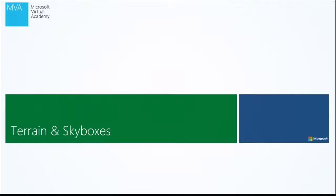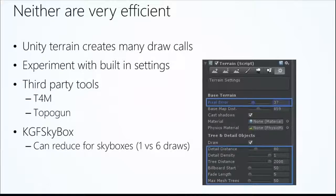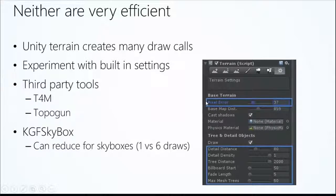Let's talk about terrain and skyboxes. Unity has a really cool terrain system, but it generates many draw calls. You can experiment with built-in settings — reducing pixel error can actually reduce the number of draw calls for terrain. Terrain is really hefty; you can drop a terrain in your scene and suddenly have 300 draw calls. There are some really cool third-party tools like T4M, Terrain for Mobile, to help optimize your terrains.